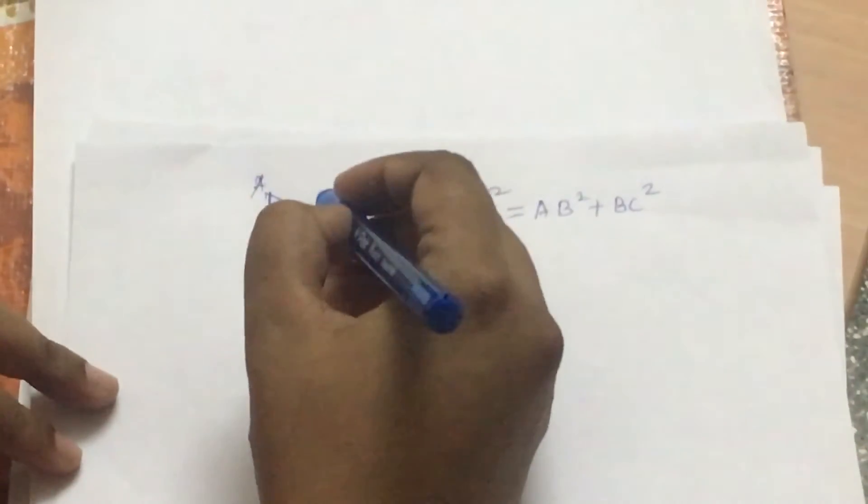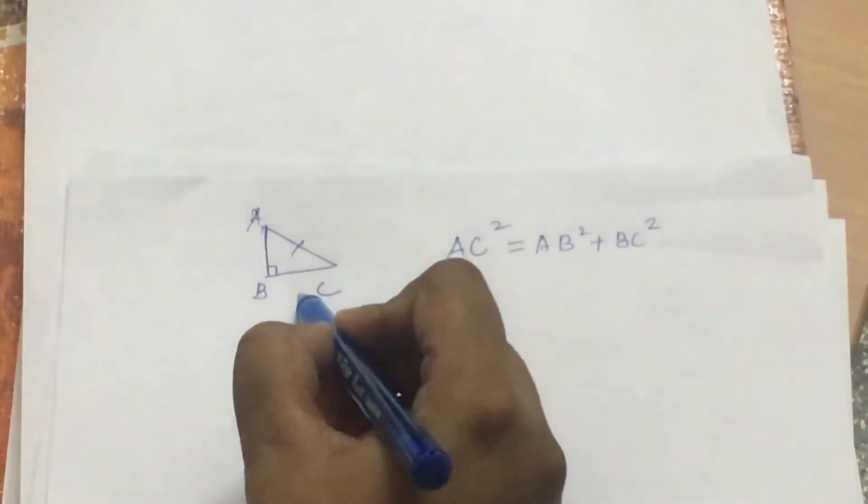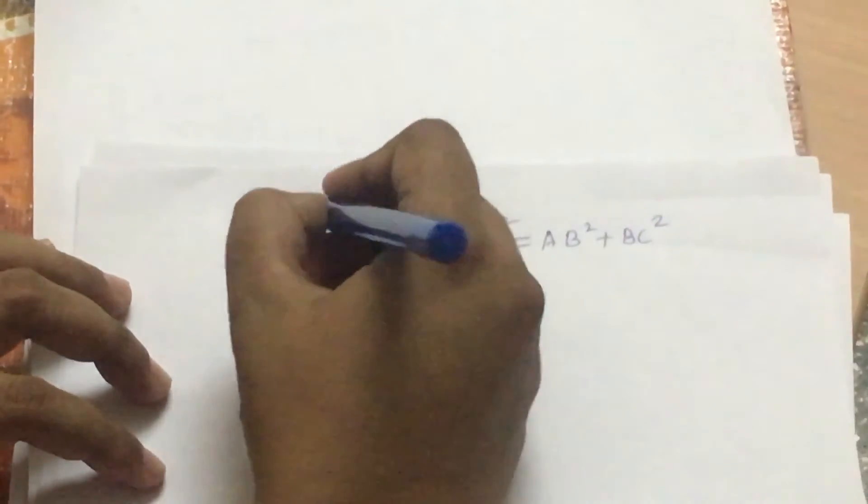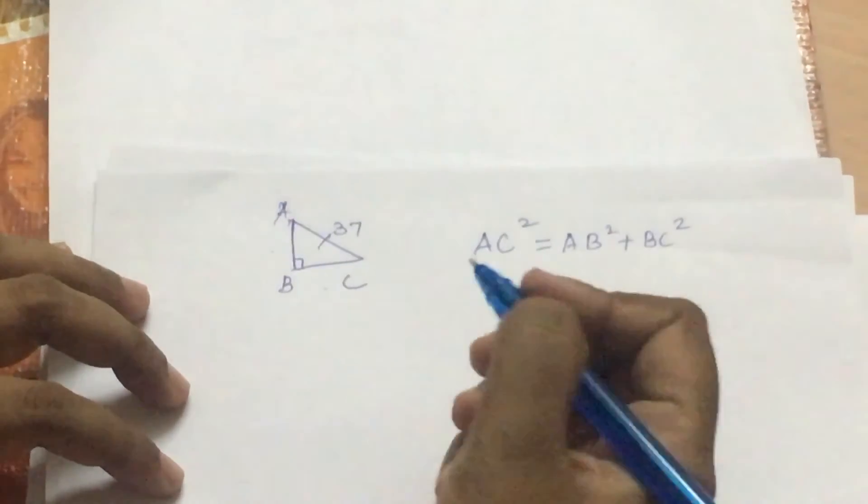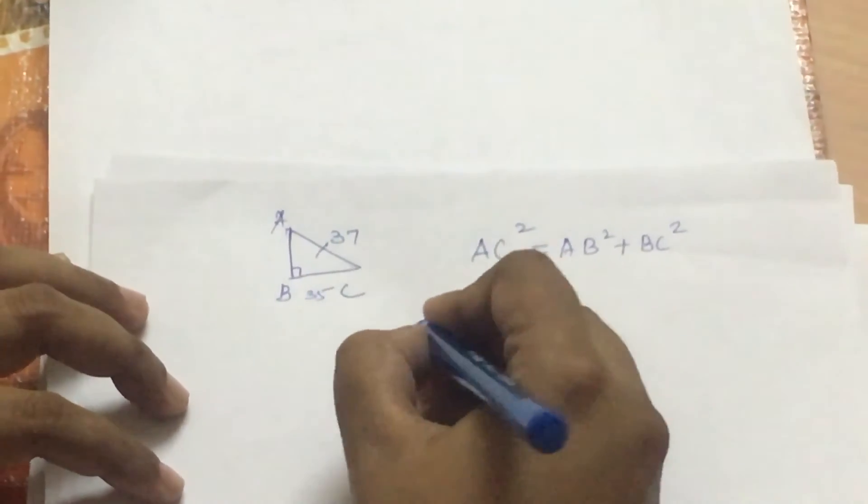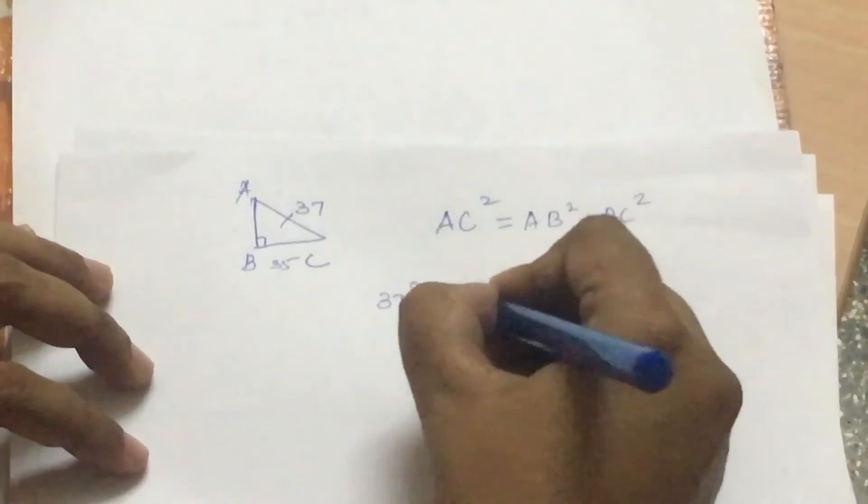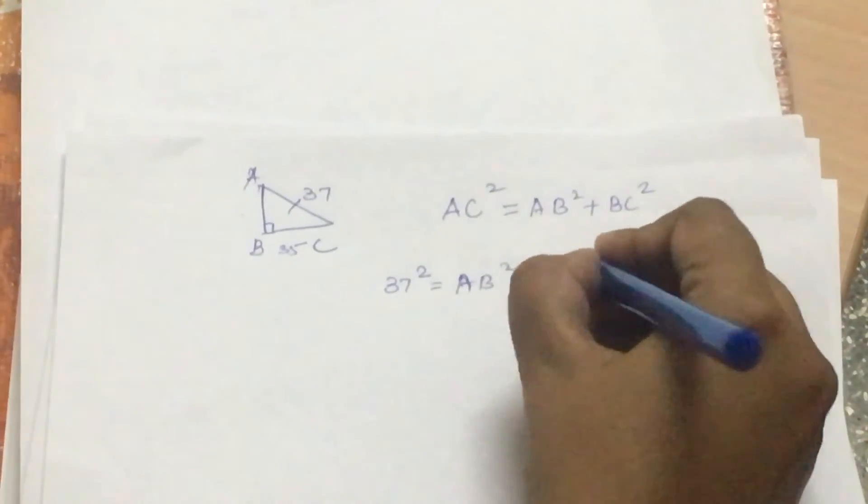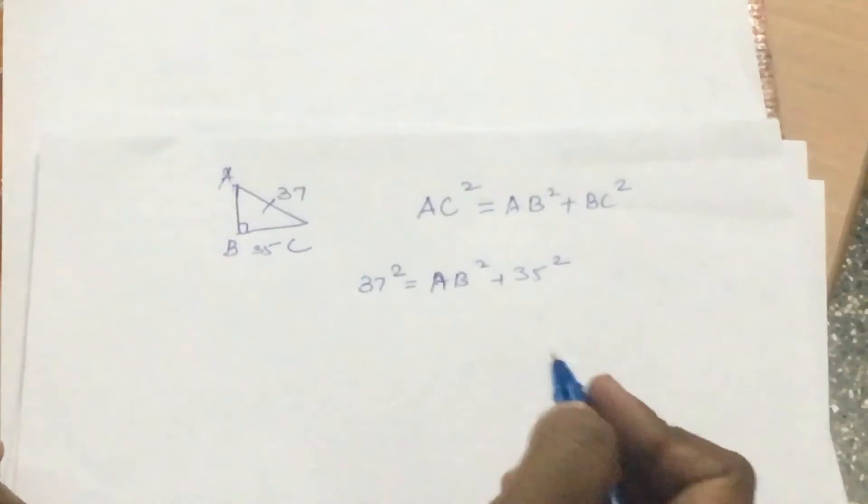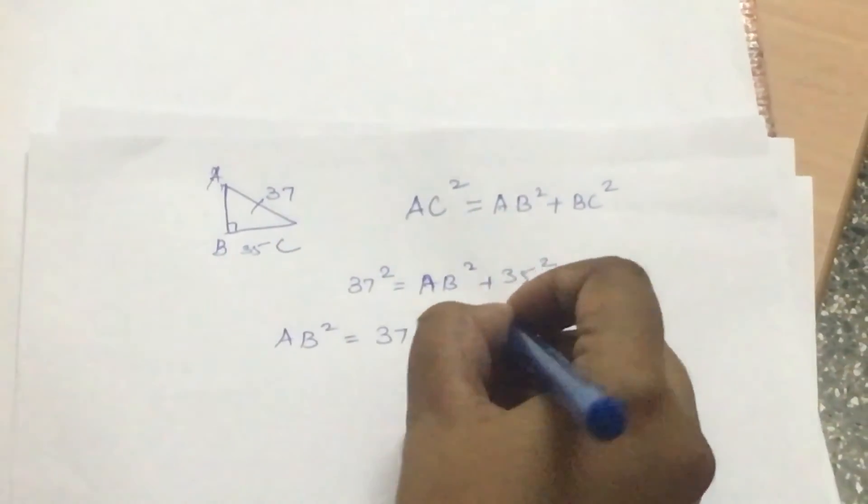Now, what happens is generally, we are given two values, like let's say we are given the hypotenuse and we are given one of the other sides. Now, we are required to find the third side. So, let me just give an example. Let's say AC is equal to 37 and BC is equal to 35. If I substitute here, I get 37² = AB² + 35². Now, I do not know AB and I need to find that. I need to just transpose, I get AB² = 37² - 35².